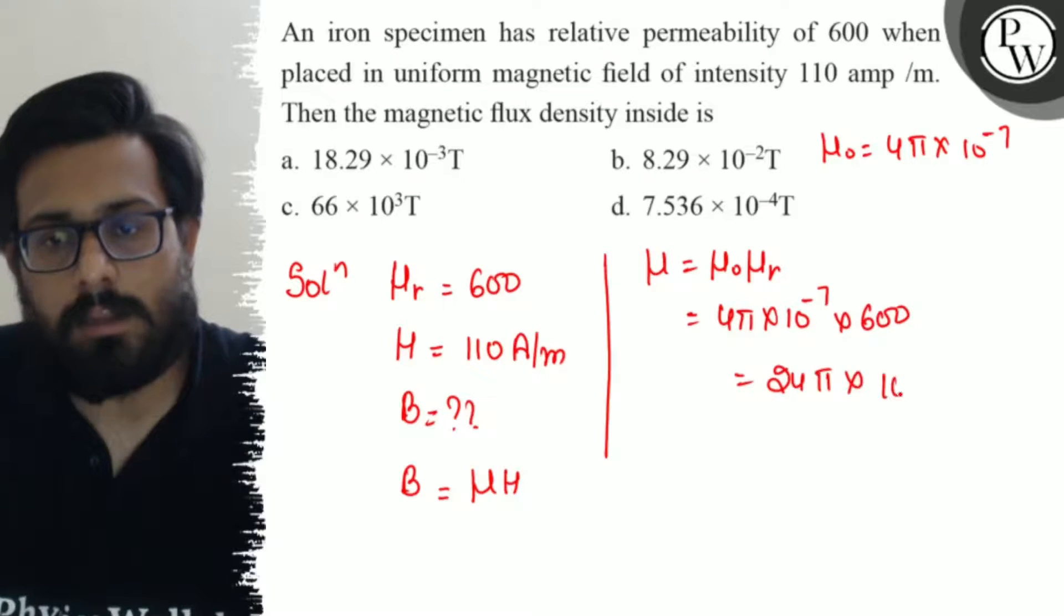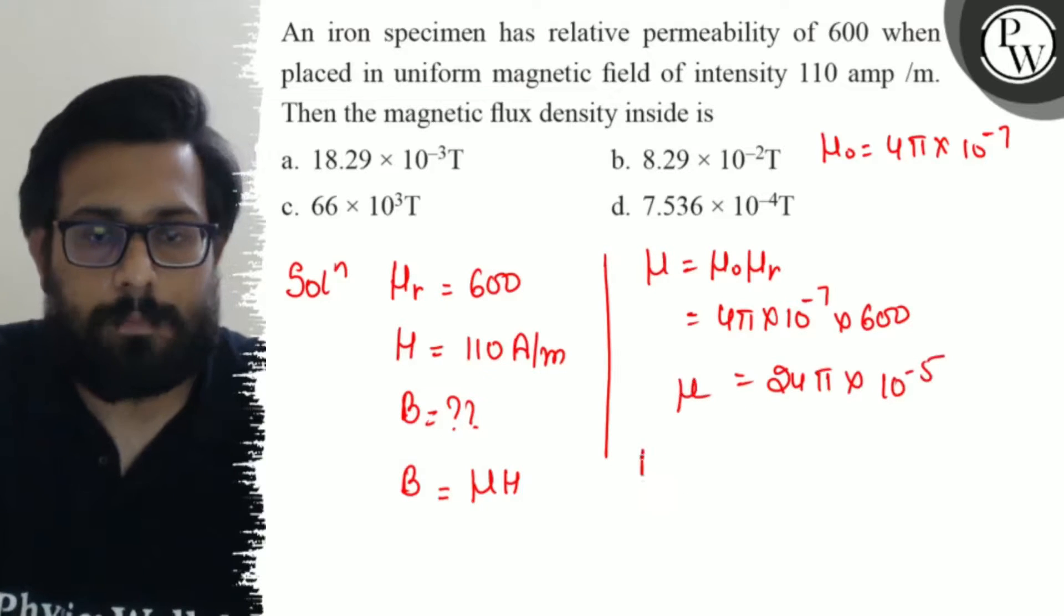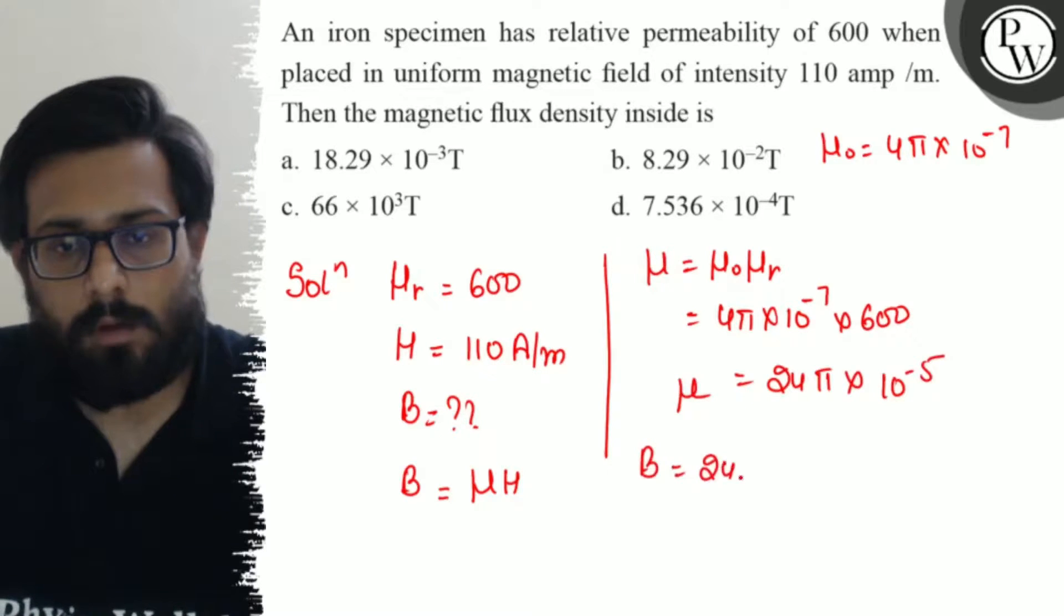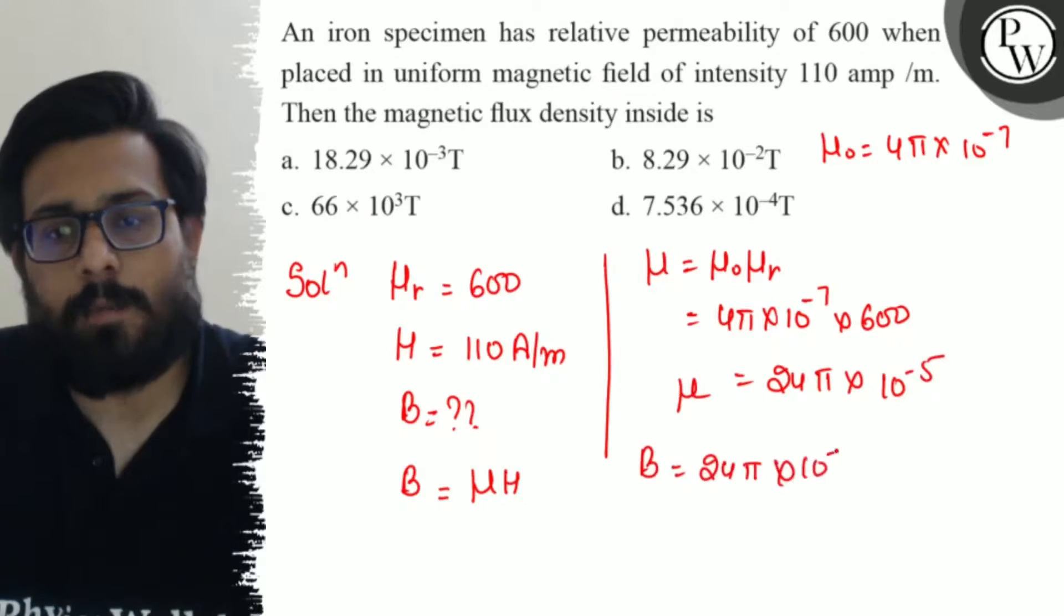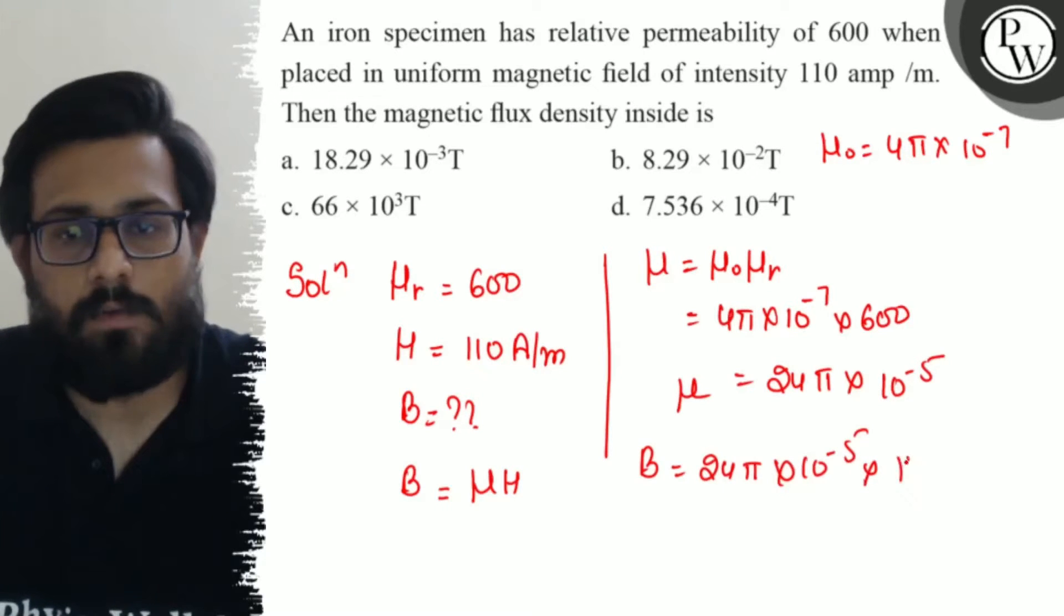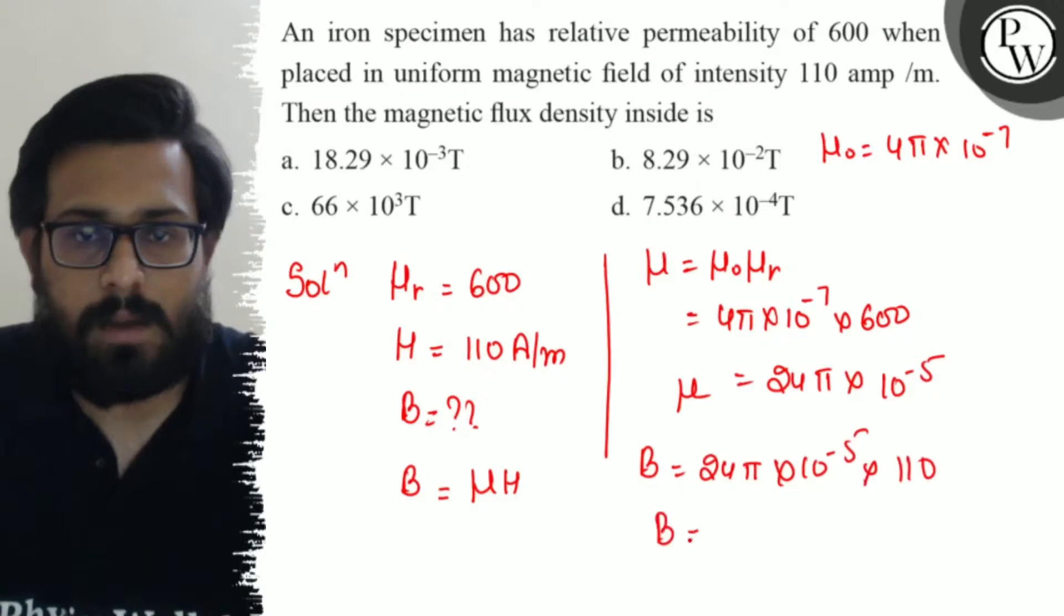Into 10 to the power minus 5 is the value of mu. So B can be written as 24 pi into 10 to the power minus 5 into H is of 110.